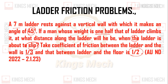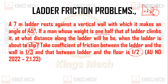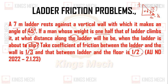So the friction values are 1/2 and 1/3. The weight of the ladder is W, the weight of the man is W/2. The coefficient of friction between ladder and wall is 1/3, and between ladder and floor is 1/2. Now we will draw the free body diagram.